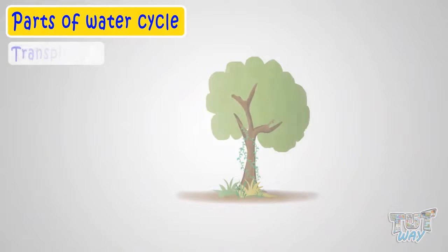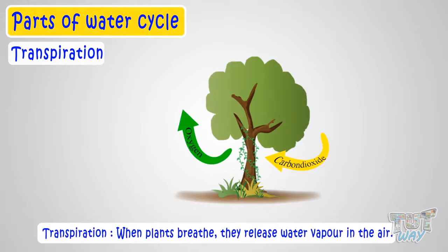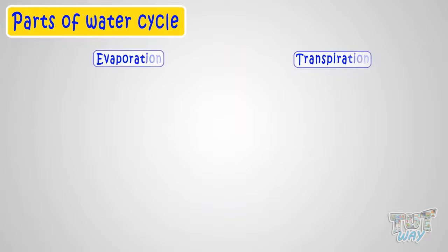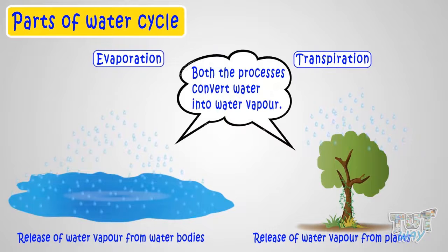When plants respire or breathe, they release water vapor in the air. This is called transpiration. Both the processes convert water into water vapors.